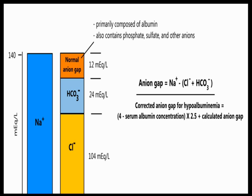Whenever you have a high anion gap in a clinical scenario and the patient has hypoalbuminemia, you must give a correction — because every one gram decrease in serum albumin gives a false reading of about 2.5 times in the calculated anion gap.